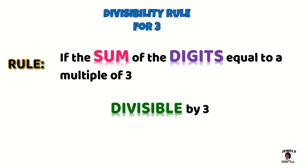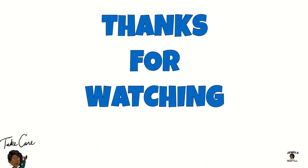Let's review before we close out. Remember that the divisibility rule for three states that if the sum of your digits is equal to a multiple of three, then that number is divisible by three. Remember that you must be able to tell the difference between your factors — numbers that can multiply to get three — and your multiples — numbers in your three timetable — to apply this rule. Make sure you practice: find some random numbers, test this rule, and see if it works. Until next time, this is Jules Math Tools, where math is made easy.